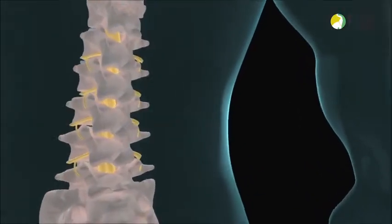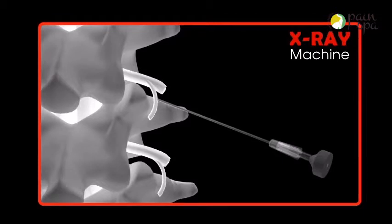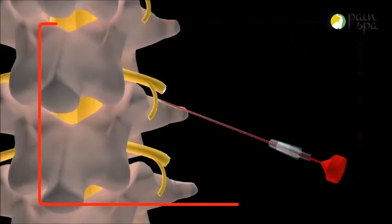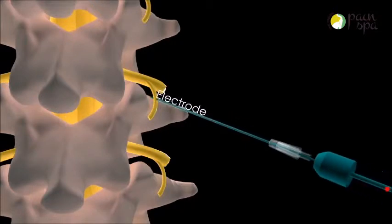He will then use a special x-ray machine to guide the radiofrequency needle accurately near the irritated medial branch nerve. A radiofrequency electrode is inserted through the needle and a small electric current is passed to test the position of the needle.